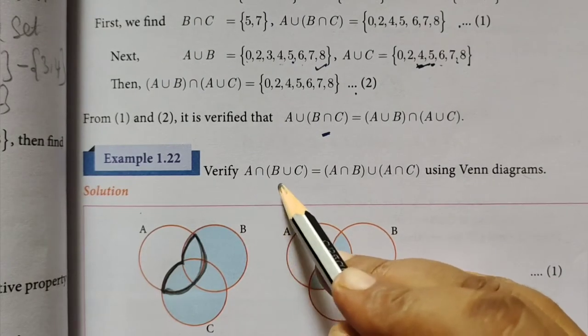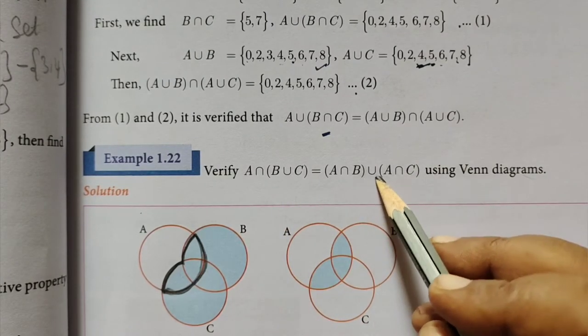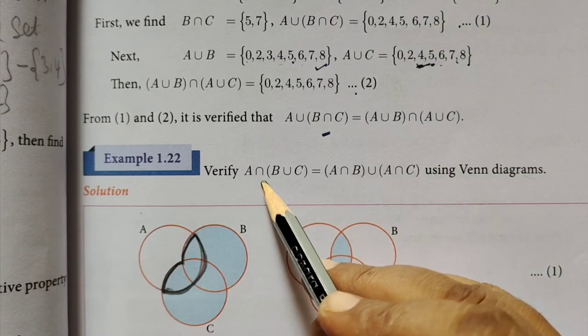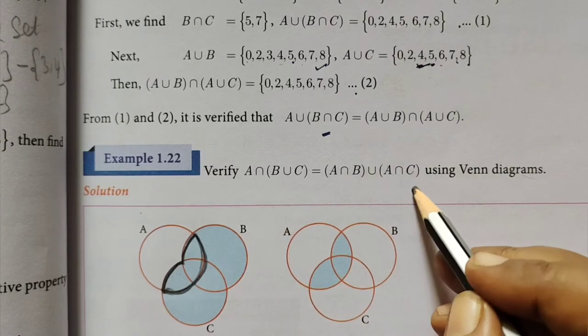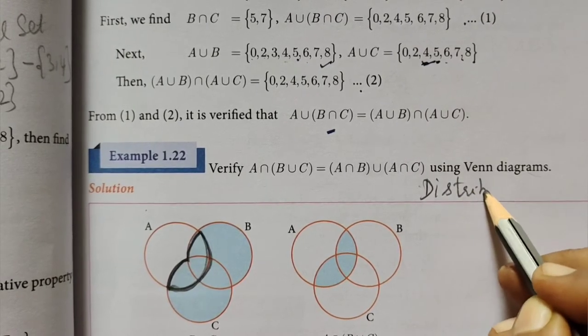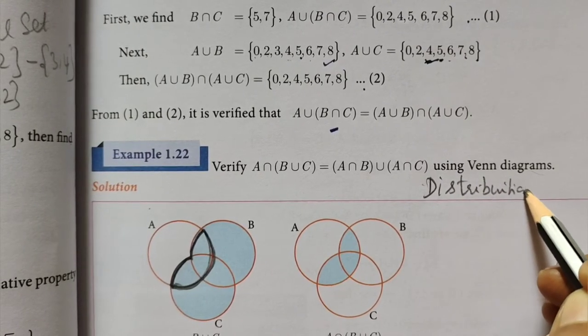A intersection B union C equal to A intersection B union A intersection C. This is actually distributive law.